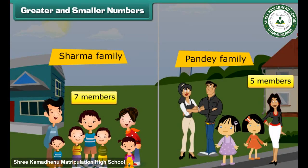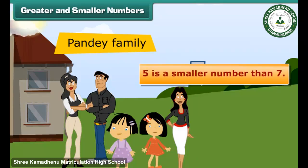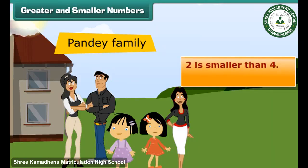Now let us look at these cases from the other side. Pande family has fewer members, which means 5 is a smaller number than 7. Therefore, numbers that come before are smaller than the numbers that come later. For example, 2 is smaller than 4, and 10 is smaller than 15.